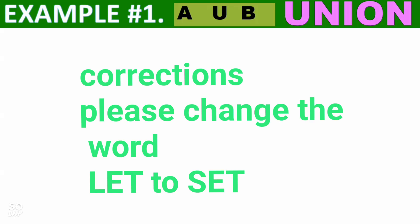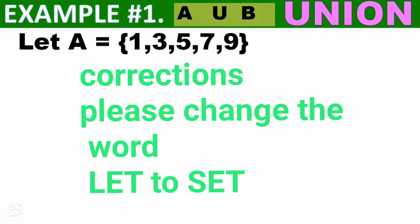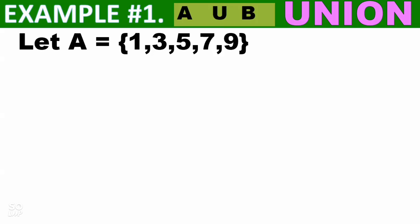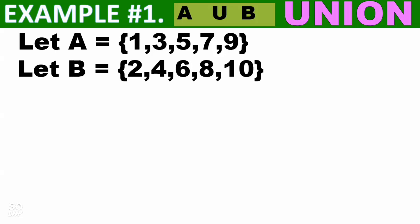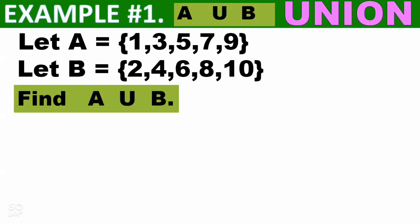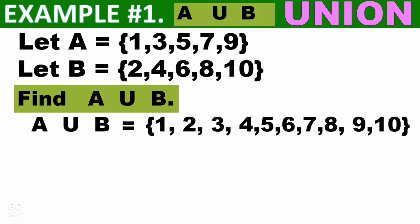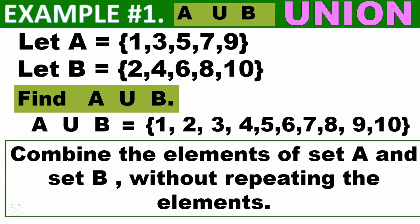Example 1: Find A union B. Let A = {1, 3, 5, 7, 9} and set B = {2, 4, 6, 8, 10}. To find A union B, we combine set A and set B. So A∪B = {1, 2, 3, 4, 5, 6, 7, 8, 9, 10}. We combine the elements of set A and set B without repeating the elements — ikukombine natin yung set A at saka yung set B na hindi nauulit yung mga elements.